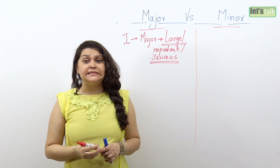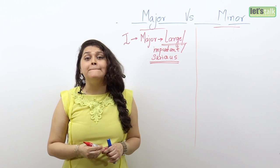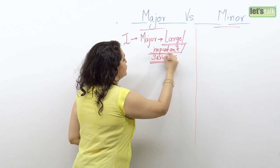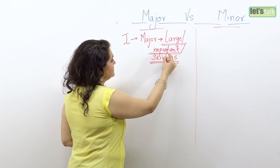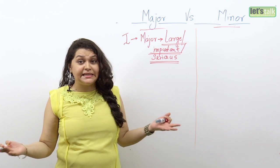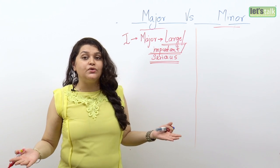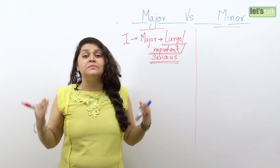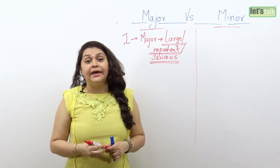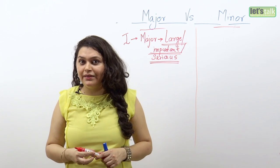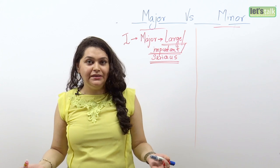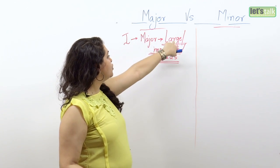And if I say something like my father is going through a major surgery, it means that my father is going through an important surgery — this is where the word major means important. Now if I say that some businessman has a major stake in a company, it means that the businessman has a large stake in the company, and the word major is being used to denote large.